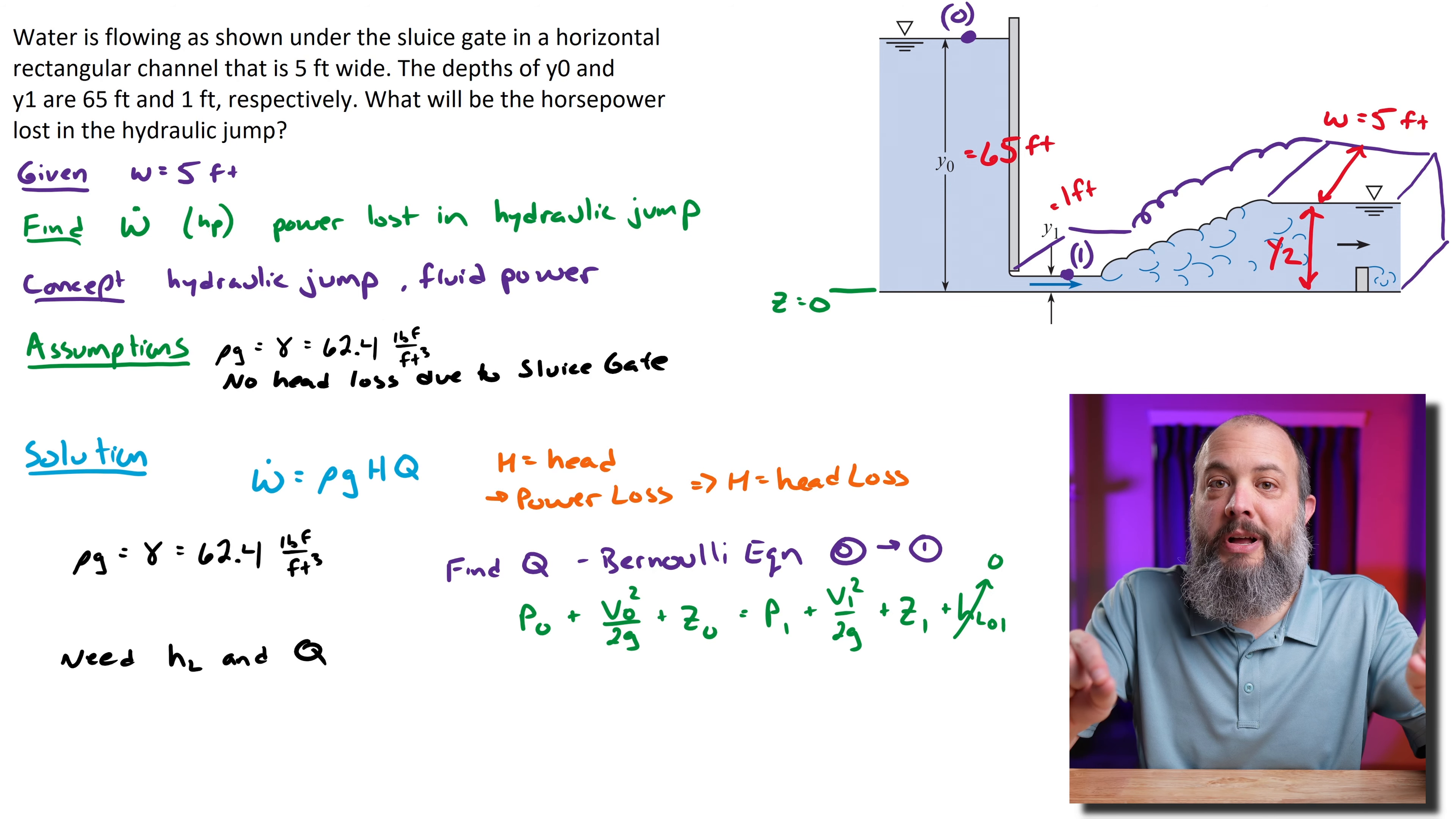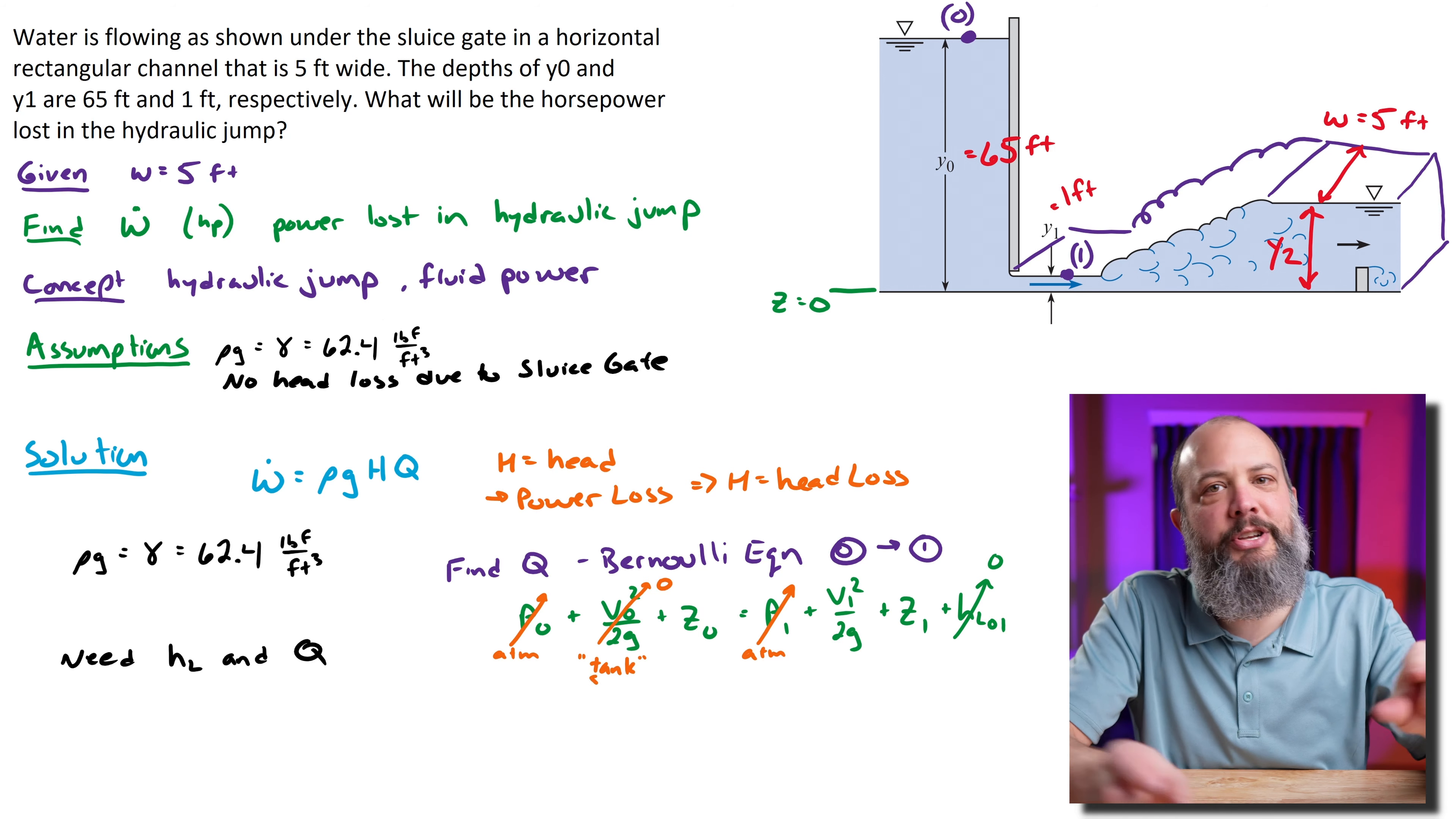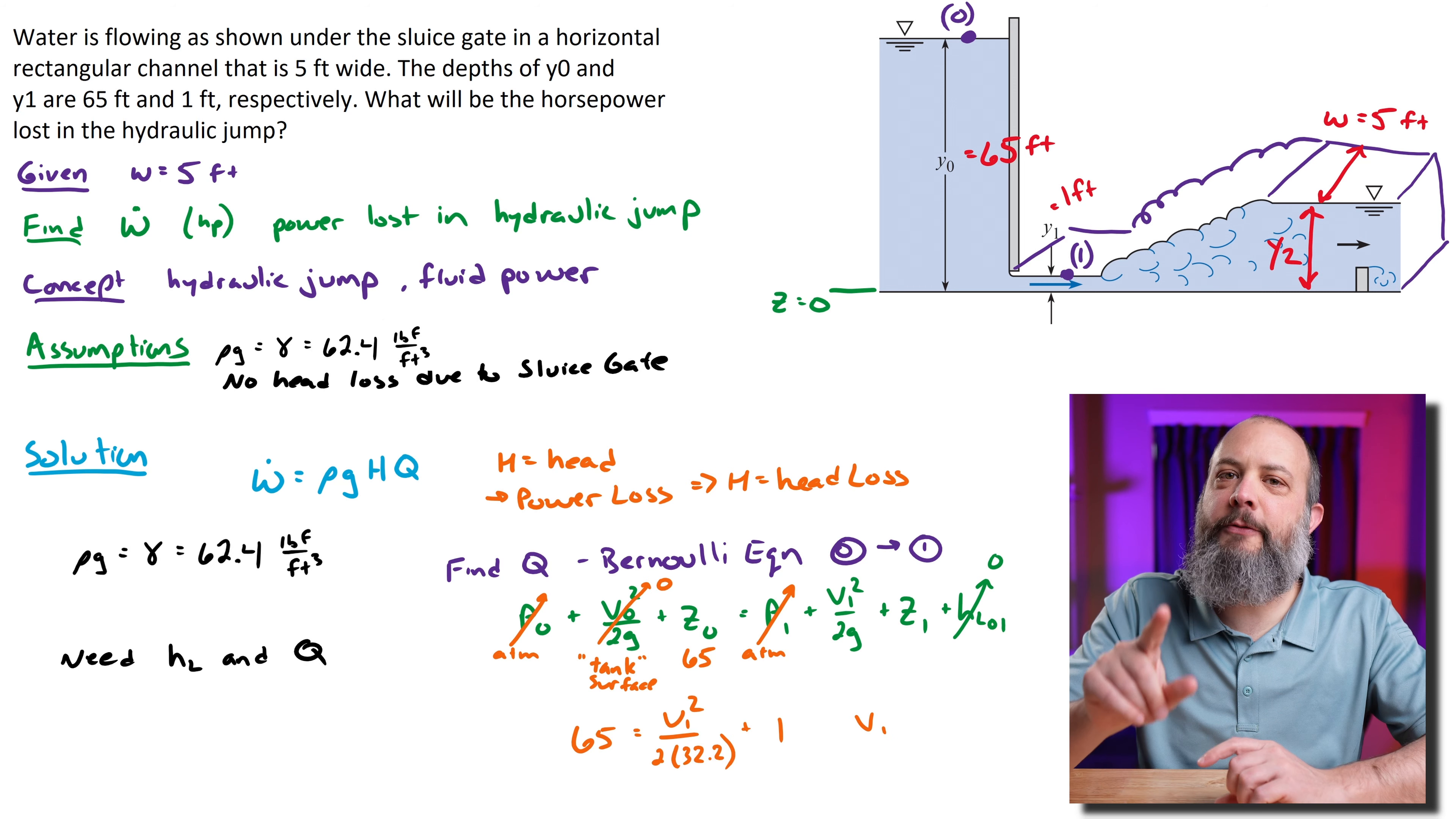Looking at point 0 and 1, I'm looking at points at the surface of the water, so they're both at atmospheric pressure—I can cross off the pressure term. Another assumption is that at the top of the tank I'll assume velocity is zero because it's a really big tank. The volume is probably lowering a little bit, but it's probably moving much slower at point 0 than point 1. So I'm going to cross off velocity 0 and say that's approximately zero. I've got initial height of 65, final height of 1 foot, and that leaves the only unknown left as v₁, the velocity at the exit of the sluice gate.